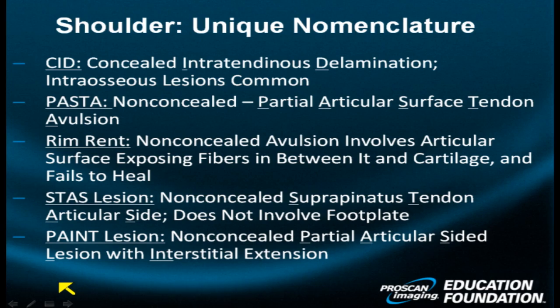Welcome to ProScan's Medical Vignettes. Today we're going to cover a difficult subject for many of you: the nomenclature used for some of the more obscure and unique partial thickness tears that occur in the rotator cuff of the shoulder. Let's get started. Here are some of the names. The list is, to say the least, intimidating.